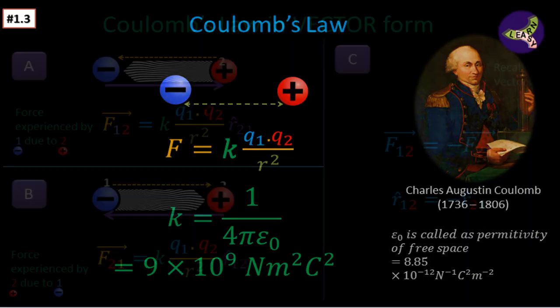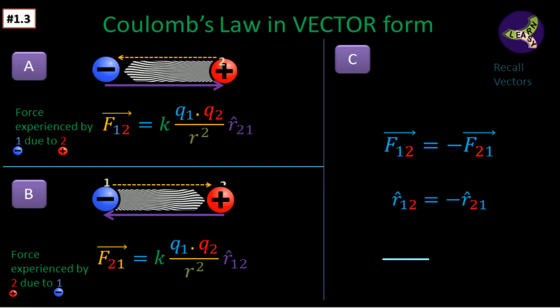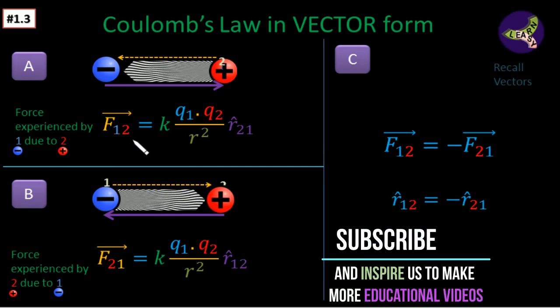Now let us see about Coulomb's law in vector form. So we have to write the force in vector form. Here you can see F12 and sometimes you may get F21. What is the connection between 12 and 21? Let's see.